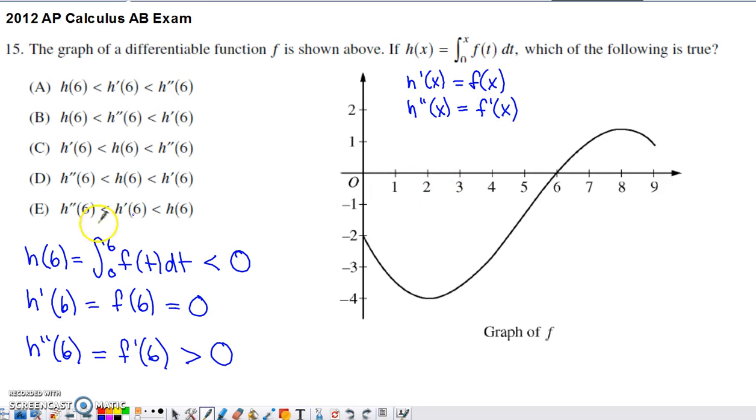So then the issue becomes, okay, now h of 6, h prime of 6, h double prime of 6, which of these will have the biggest value, which will have the smallest value?